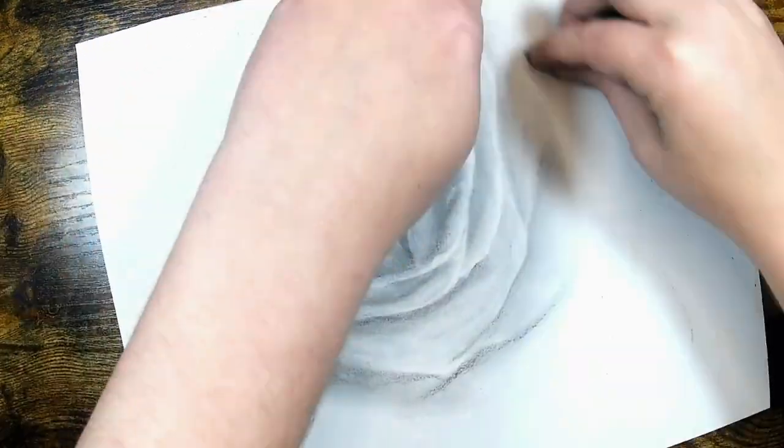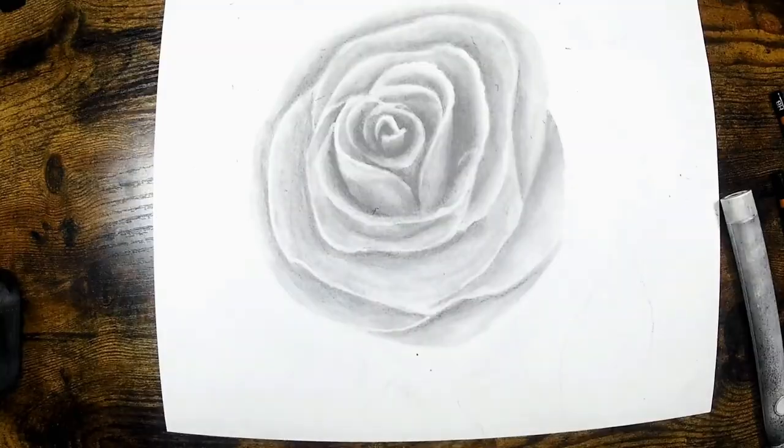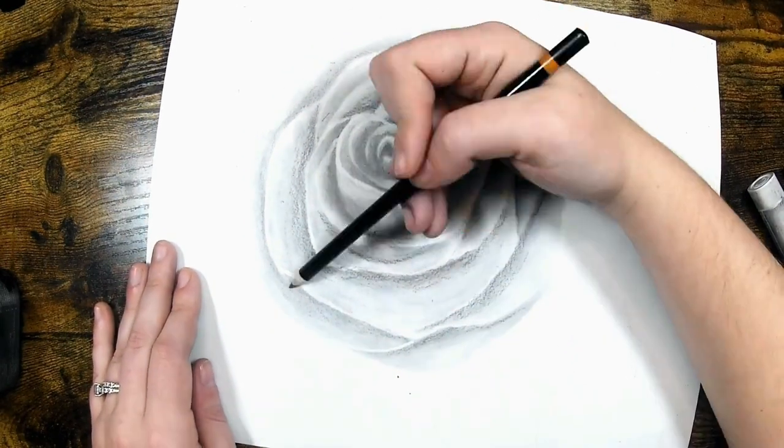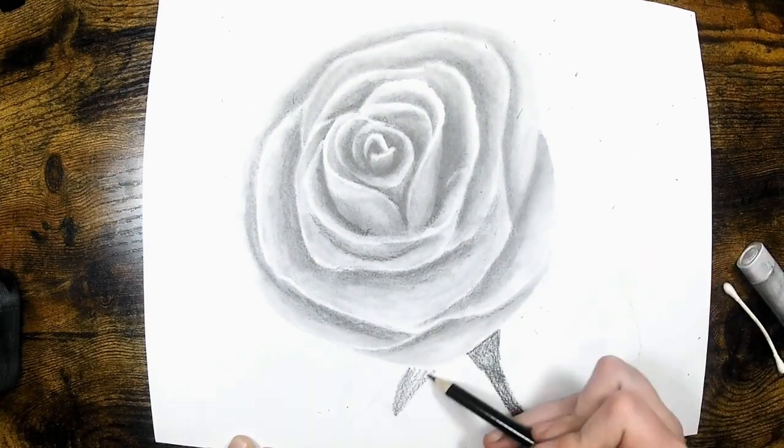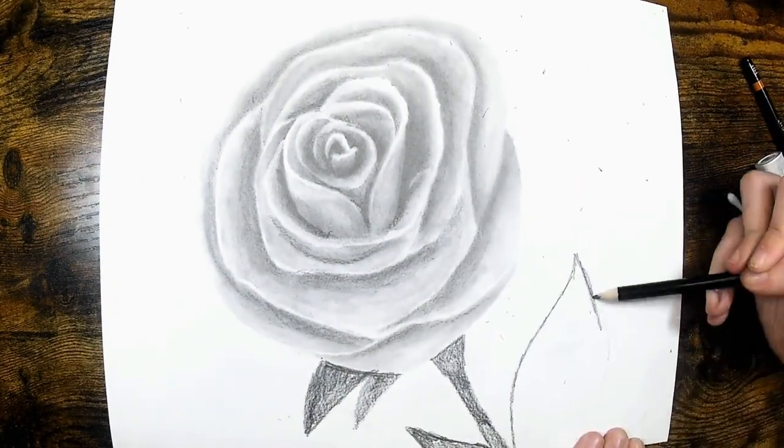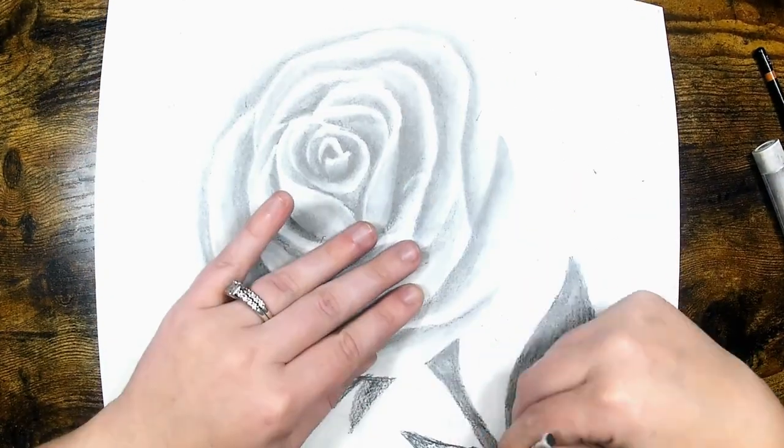The tips of the petals are probably the most highlighted part of the flower, so to create more realism we can highlight the very tips of the rose. Another great use of this tool is to add highlights to the stem as well as adding veins to the leaves.